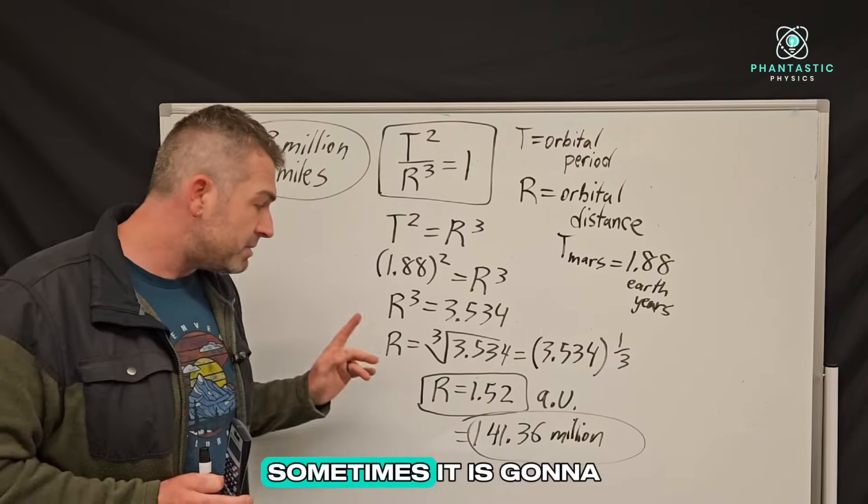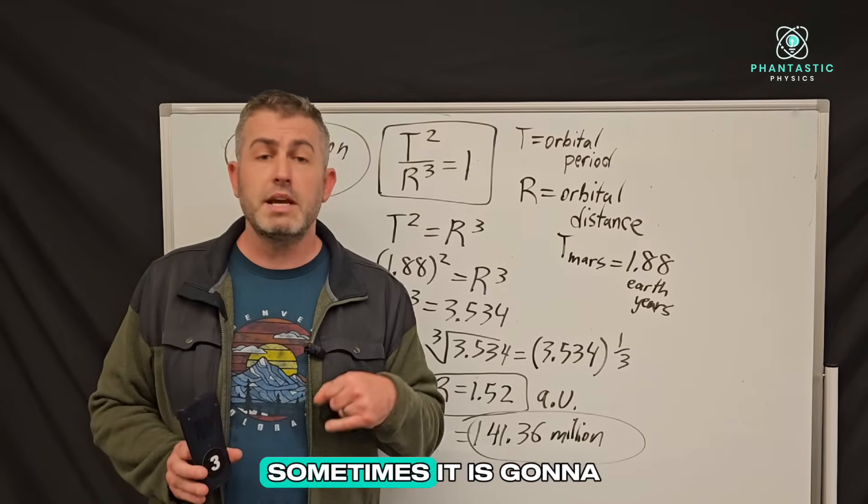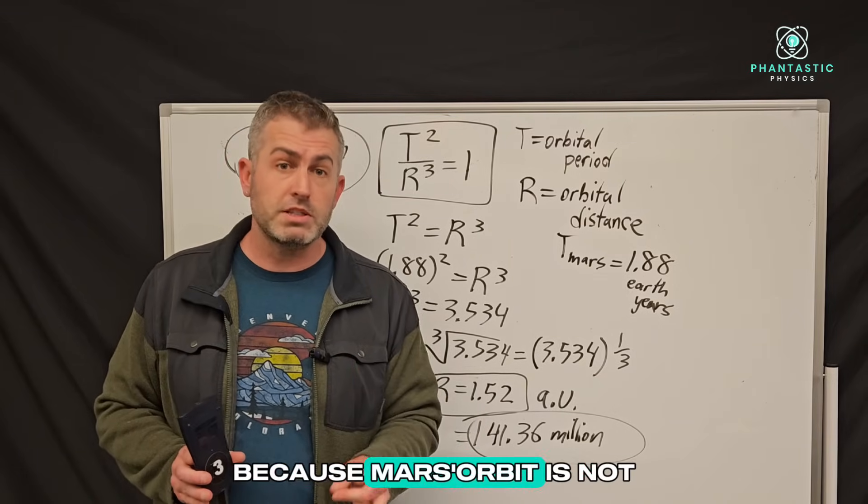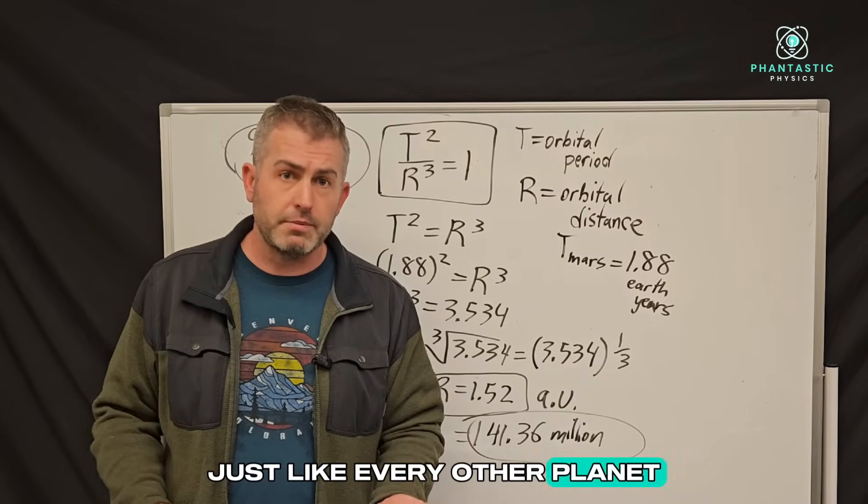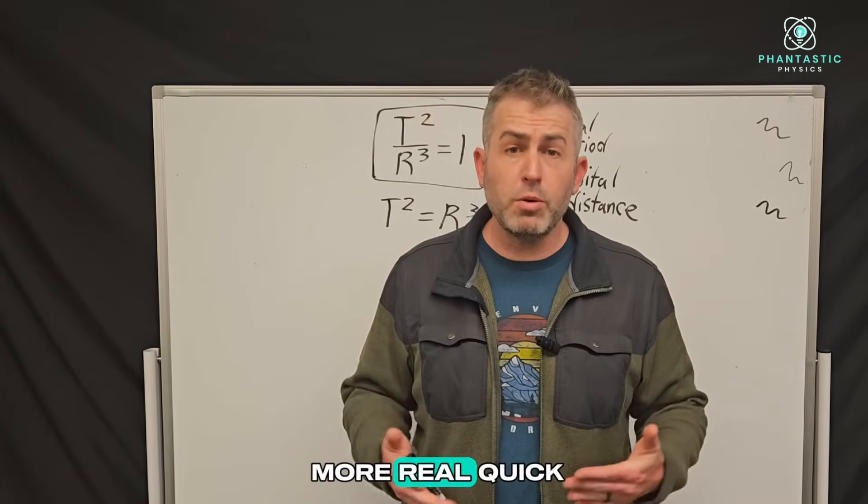So we use Kepler's third law to actually figure out how far away from the sun Mars is on average. But remember, sometimes it is going to be closer than this. Sometimes it is going to be further away because Mars's orbit is not a perfect circle, just like every other planet. Let's try one more real quick.